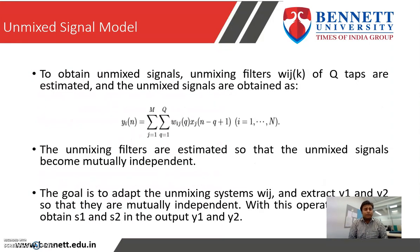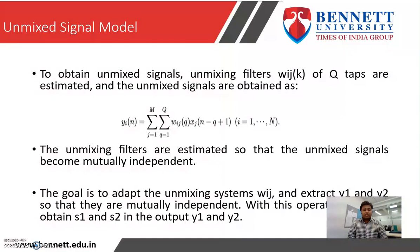For finding the unmixed signal, we apply the unmixed signal model. As you can see in the equation, the unmixing filters are estimated so that the unmixed signals become mutually independent. Here, Wi is the unmixing system, and it extracts Y1 and Y2, which are the unmixed signals that are mutually independent. With this operation, we can obtain S1 and S2 in the outputs Y1 and Y2.